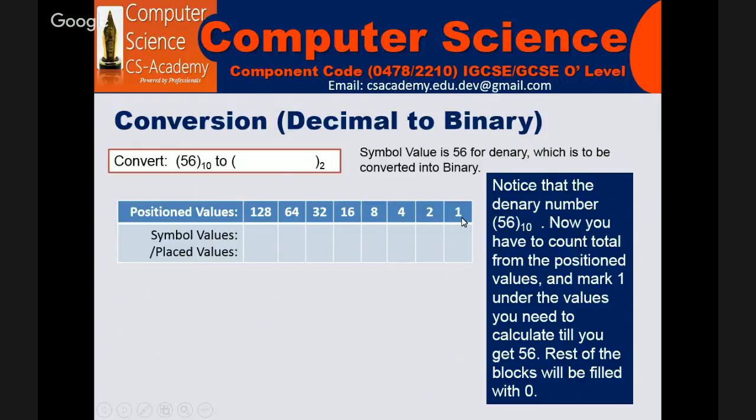The position values have been created by using 2 raised to the powers. 2 raised to the power 0 gives 1, 2 raised to the power 1 gives 2, 2 raised to the power 2 gives 4, 2 raised to the power 3 gives 8, and so on. The sample values will be those values which will make the total of 56. You will be putting 1s under those position values which will make a sum of 56.